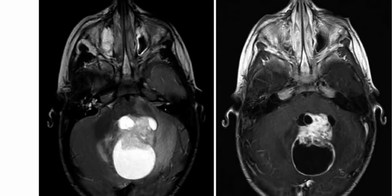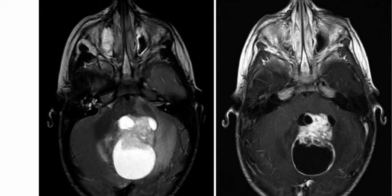On the axial T2 and T1 post-contrast MRI, the mass is slightly eccentric to the left. There is solid enhancement as well as enhancement along the walls of the cystic components. The fourth ventricle is effaced and there is surrounding edema in the cerebellar hemispheres.